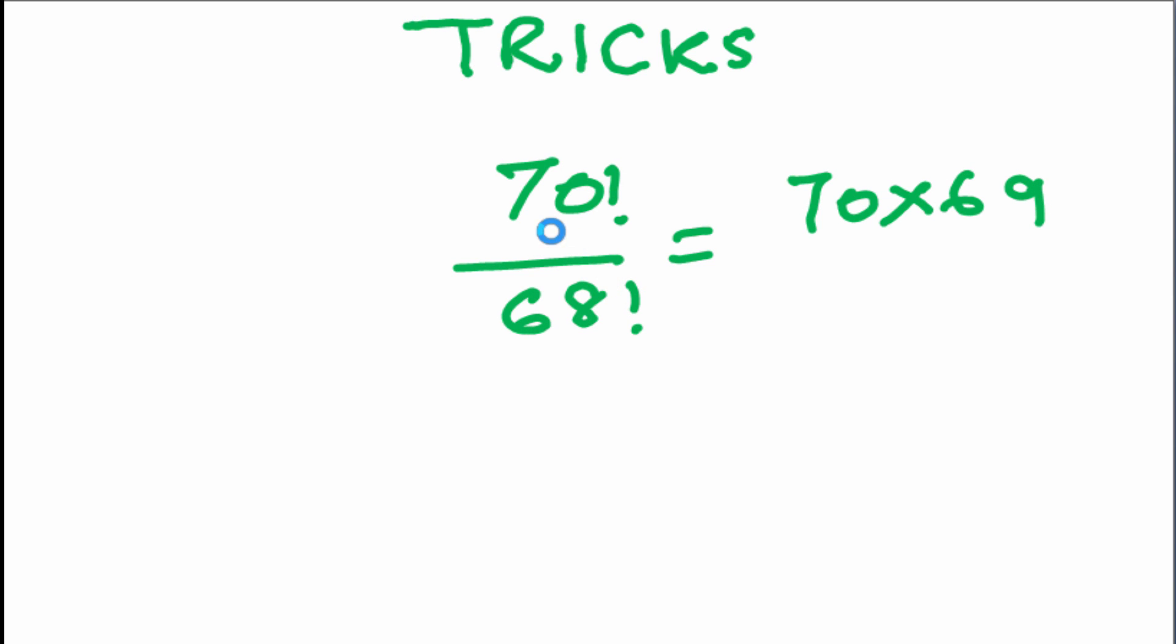As 68 factorial has been taken out from 70 factorial. So, 70×69 is left. That will be 4830.